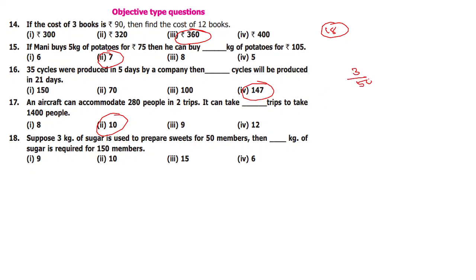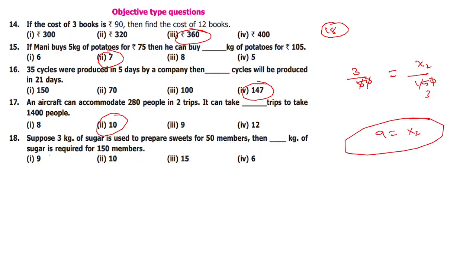Now 3 by 50 — okay, 50. Now where you can use sugar: 0, cancel — this is 3 times, this is multiple — x2 equals 9.